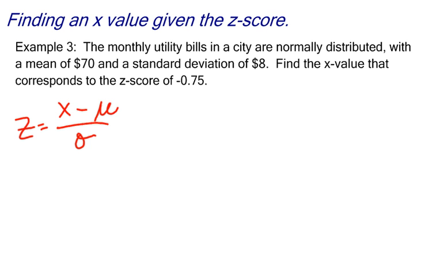As I read through this, I'm going to highlight some things. The monthly utility bills in a city are normally distributed, and since they're normally distributed, that tells me I can use z-scores with a mean of $70 and a standard deviation of $8.